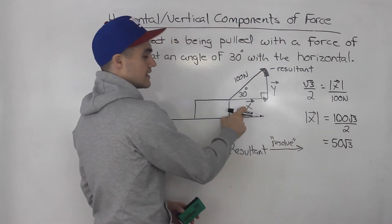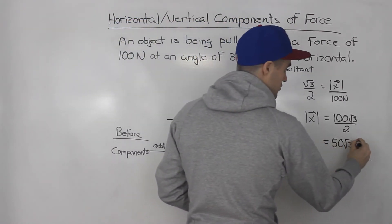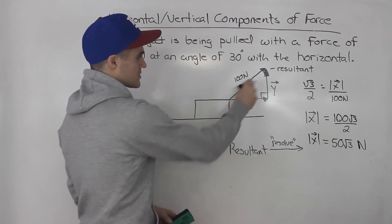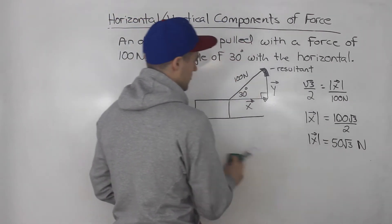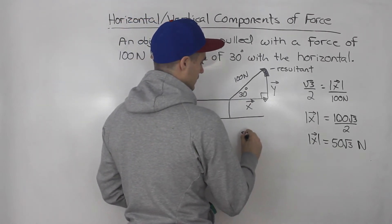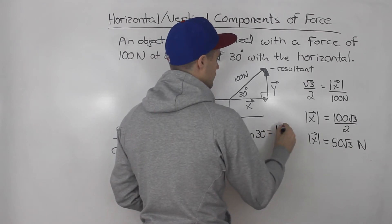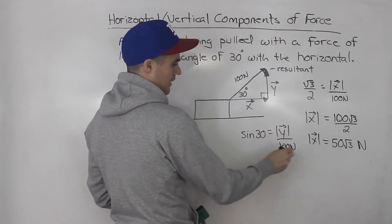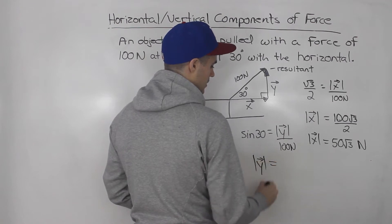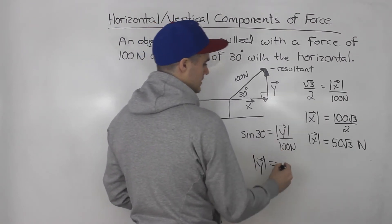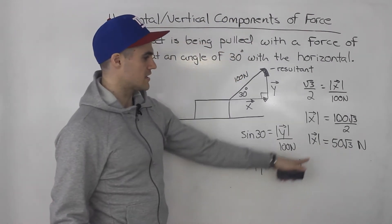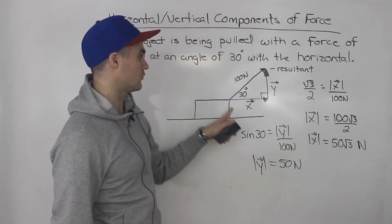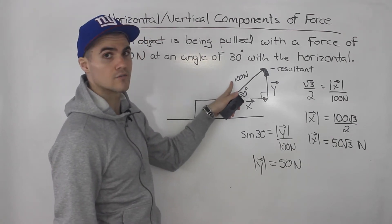If we cross multiply and isolate for the magnitude of vector x, we get 100 times root 3 over 2, which is 50 root 3. Since this is a force, it's measured in newtons — that is the horizontal force. We can also solve for the vertical component. Sine of 30 equals the magnitude of y over 100 newtons. Sine 30 equals one half, so when we cross multiply, the magnitude of y is 50 newtons.